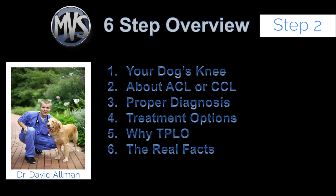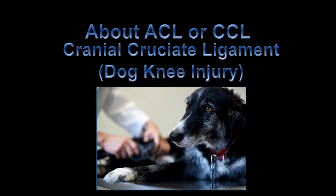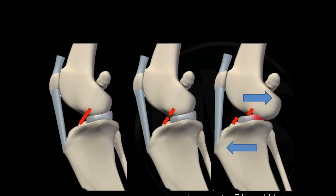Welcome — here we are at step number two of the six-step overview. If you missed step one, check out that video, as it explains some anatomy that will help you understand where we're at. Step three is how to properly diagnose a torn ACL, step four covers treatment options, step five addresses why somebody might choose a TPLO to treat an ACL injury, and step six presents scientific evidence to help you make the best decision for your pet.